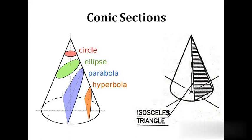The first one is circle. Circle is the section obtained by cutting a right circular cone by a section plane perpendicular to the axis of the cone and cutting all the generators. The section plane is perpendicular to the axis or parallel to the base of the cone. In this case, the section is a circle.